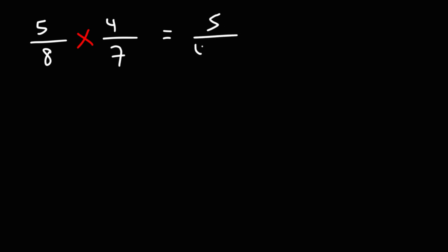So the 8, I'm going to break it into 4 and 2. And just like before, we could cancel the 4. I have a 5 on top. And on the bottom, 2 times 7, which is 14. So I'm going to get 5 over 14.